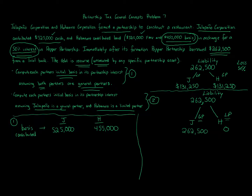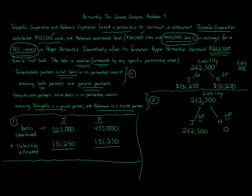We use the carryover basis, not fair market value, because there are no tax consequences on contribution — the tax basis rolls over. In scenario one, we add the liabilities each partner is responsible for: both get $131,250. So Jalapeno's ending basis is $525,000 + $131,250 = $656,250, and Habanero's ending basis is $455,000 + $131,250 = $586,250.